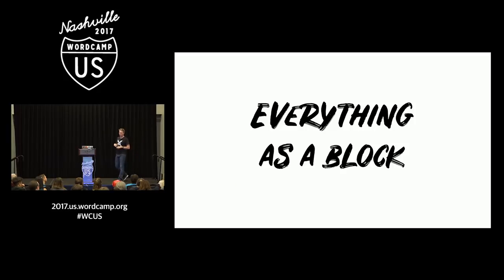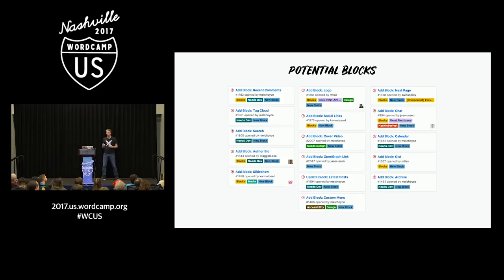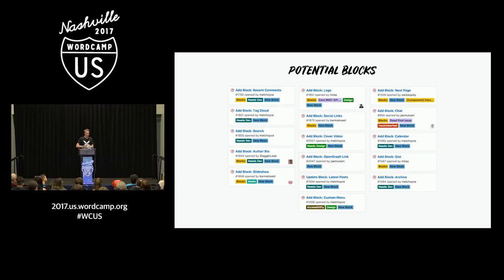These blocks should be able to live anywhere. If everything is a block, a lot of things change. Looking at the current potential blocks list — caveat, maybe none of this happens — we have recent comments, tag cloud, search, author bio, slideshow, logo, social links, cover video, open graph link, latest post, and custom menu. All these things can be blocks. And in addition, you'll have all the plugin and theme things that people will introduce.